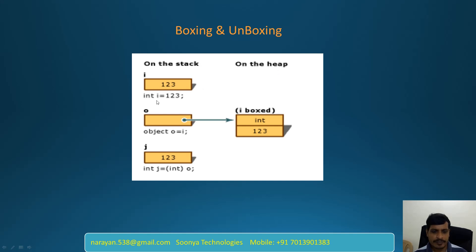Here, we declare variable i and stored 123. This 123 is directly stored into stack memory. In the second step, we declare object o and assign it integer i. Here, we are storing integer value into object o — this is called Boxing. What will happen? 123 will not directly store into object o. This object references the actual object that is located in heap memory. Inside that object, we have the value 123. If you want to get the value from this object, then we need to do unboxing.